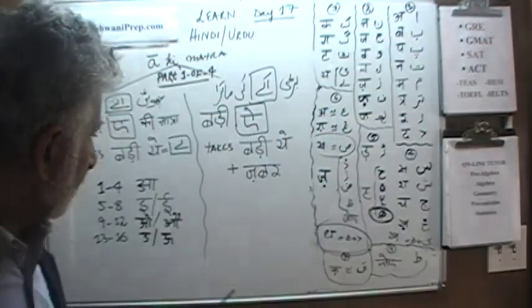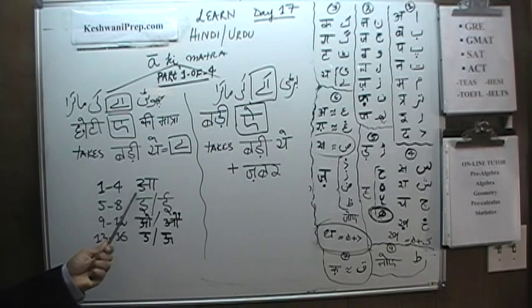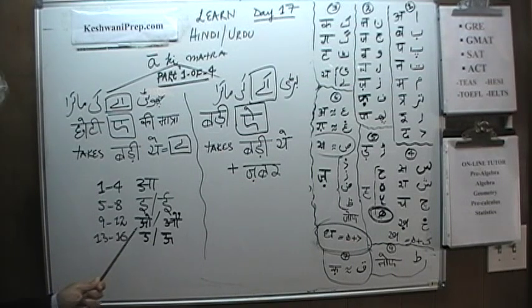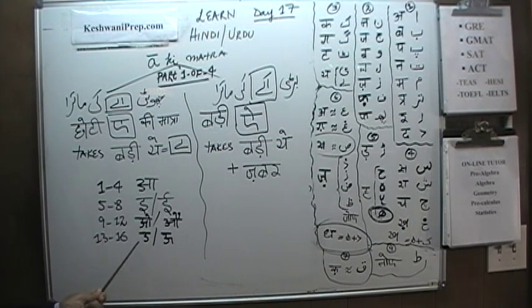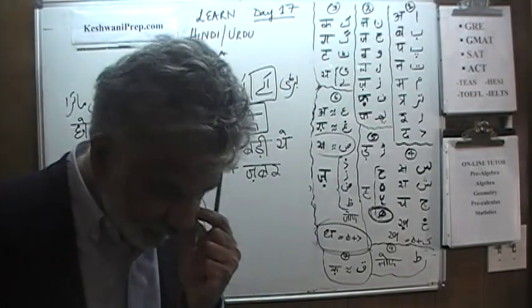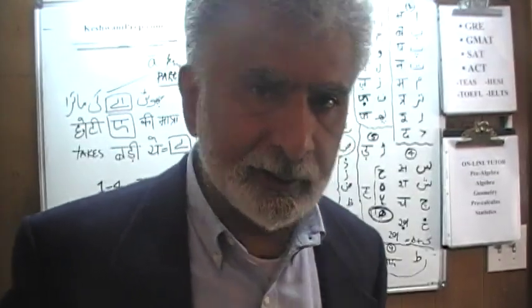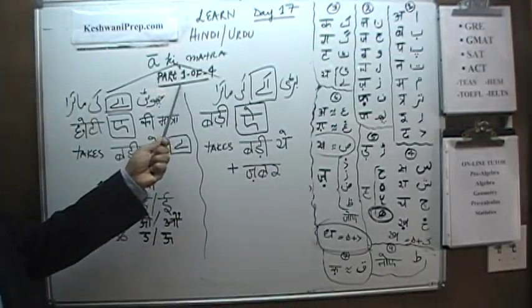On days one through four, we did Aki Matra. On days five through eight, we did Iki Matra. On days nine through twelve, we did Aoki Matra. We just finished the Uki Matra on days 13 through 16. Today we're going to start the fifth matra — the Aki Matra — which will also go in four parts: days 17, 18, 19, and 20. Today is part one of four.